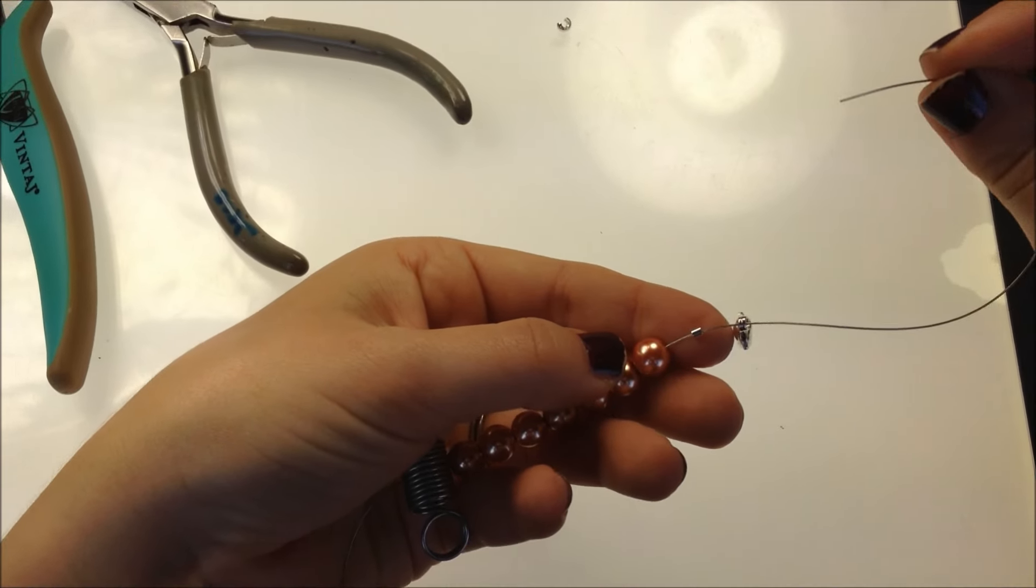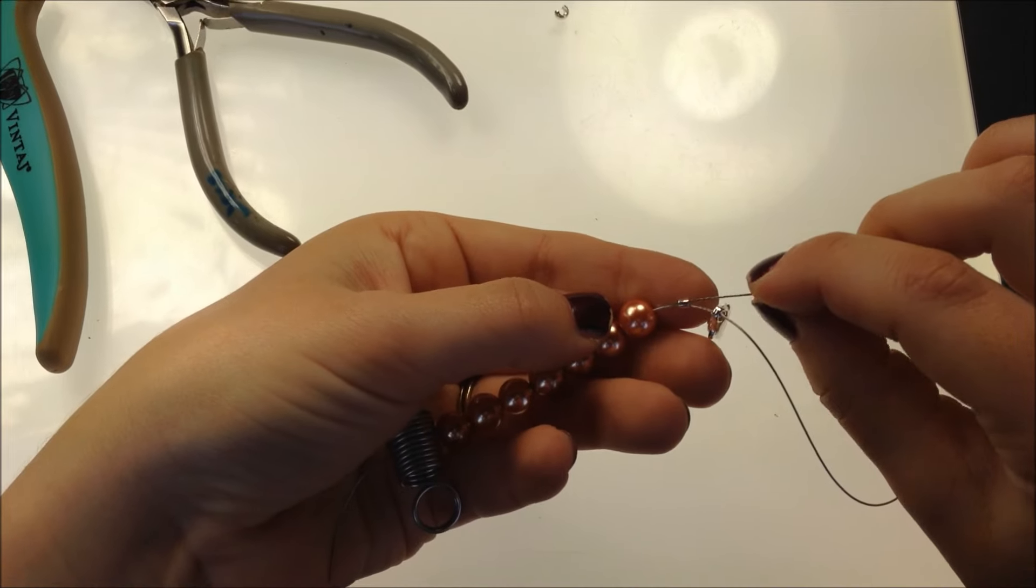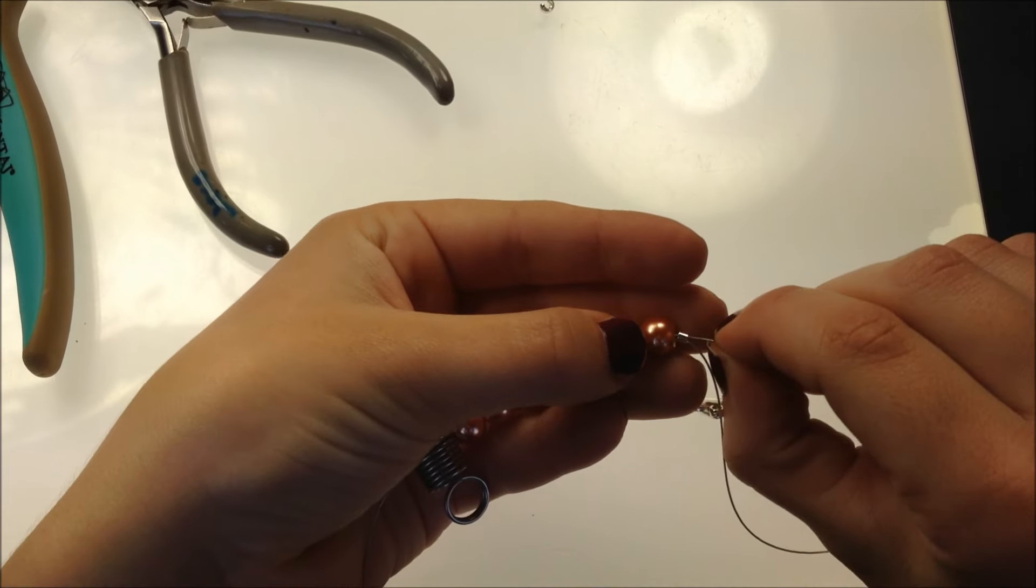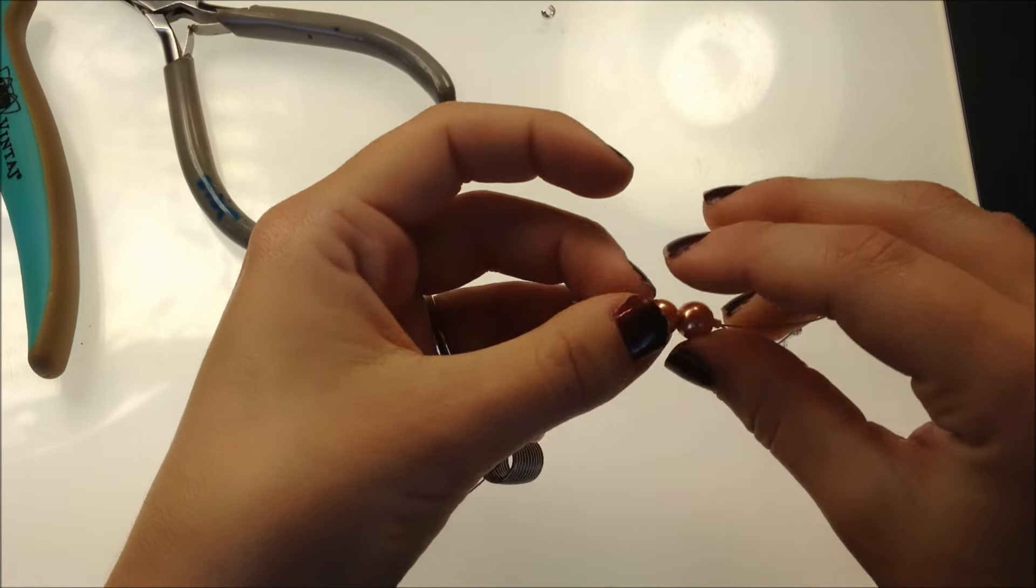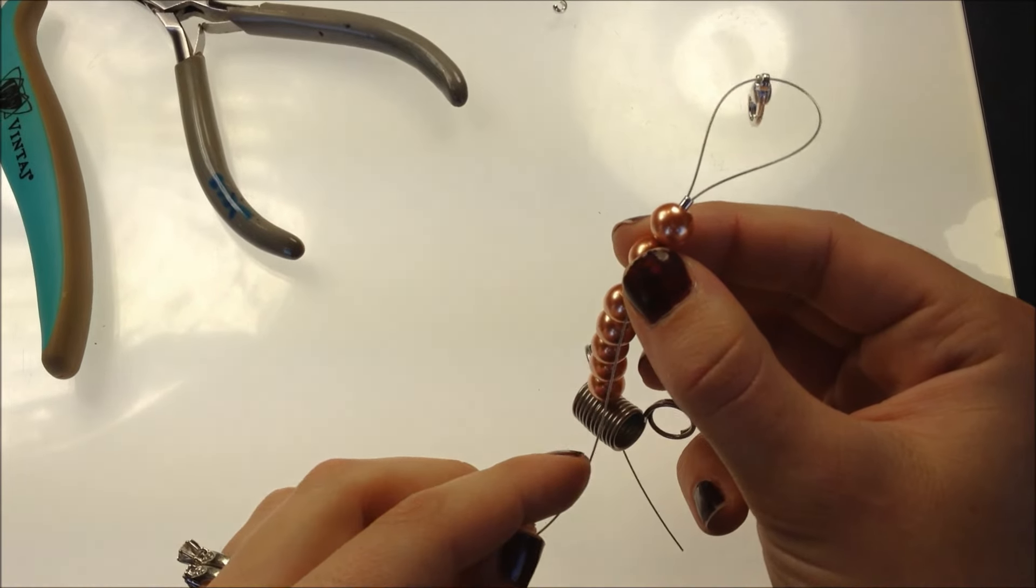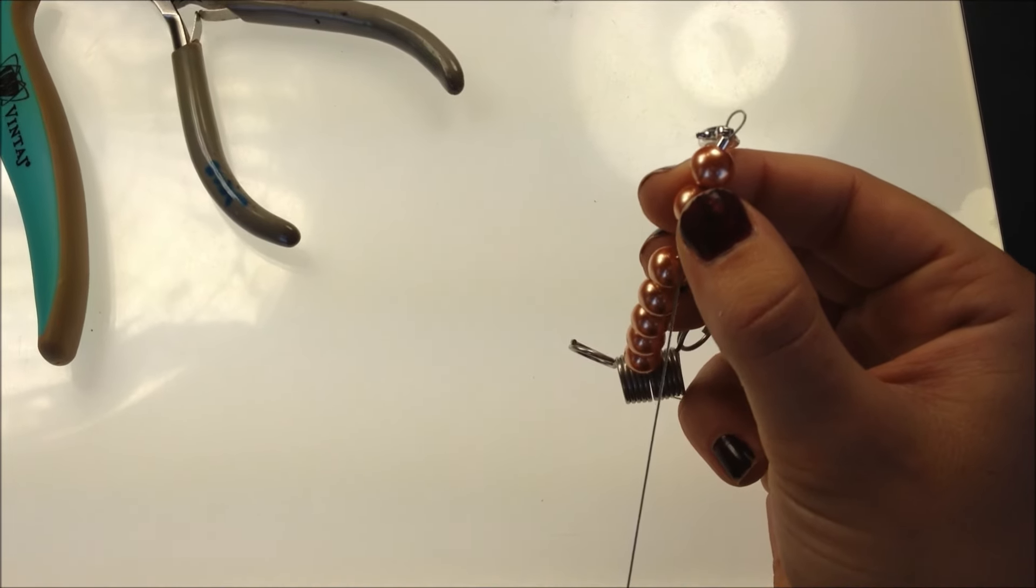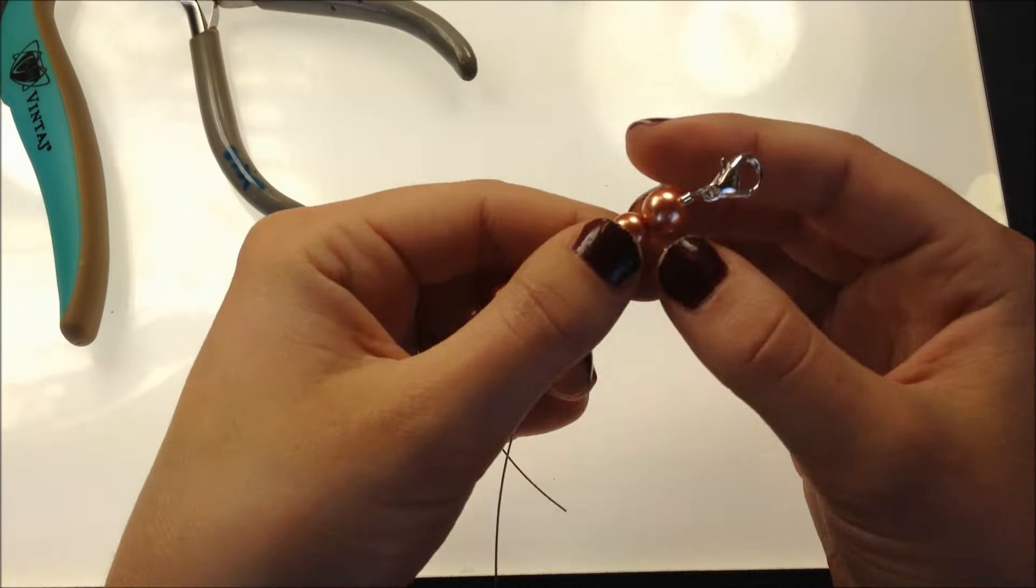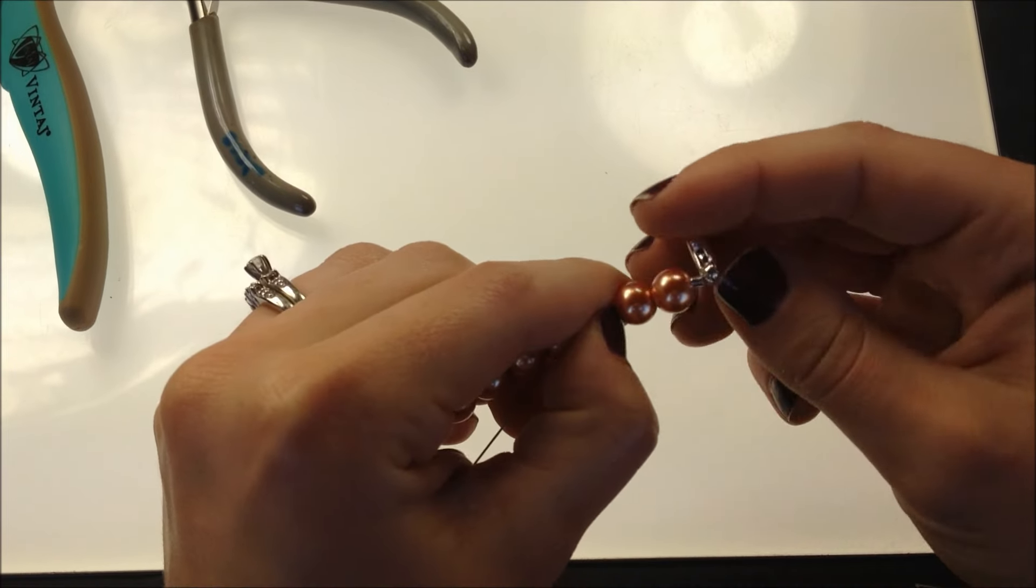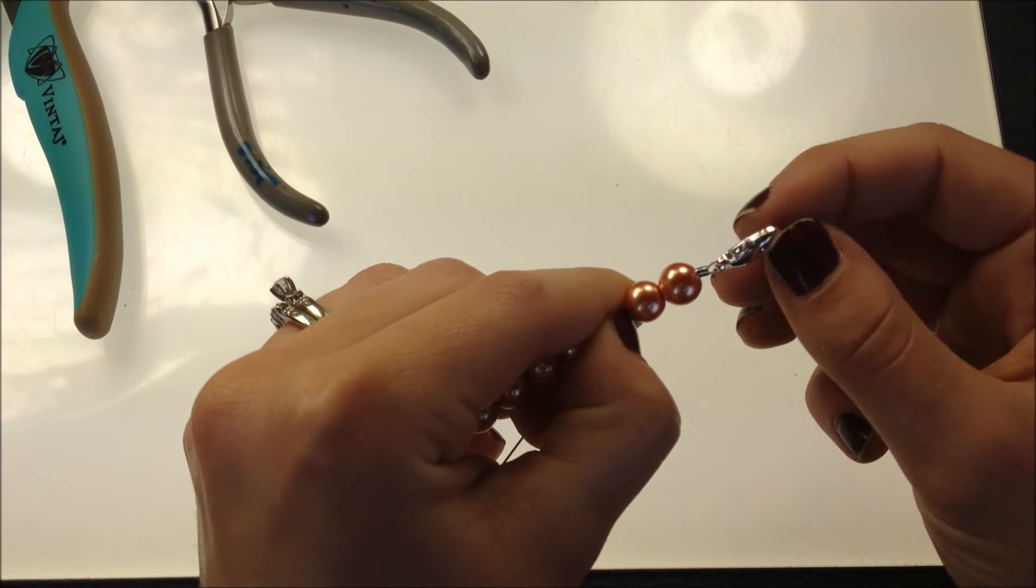You're going to take your tail and slide it down through the crimp bead, through a couple beads, and pull the tail tight. You want to make sure you get it tight enough that you have a small loop, but loose enough that your clasp can move around freely.